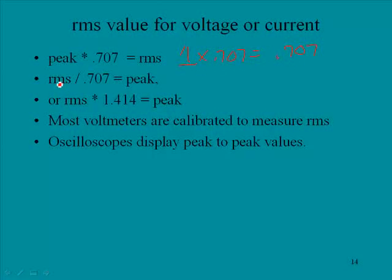We could take the RMS value, and that would be 0.707 in this case, and divided by 0.707, and that would equal the peak. So 0.707 divided by 0.707, that's 1 volt, which was our original value in peak. Or we could take RMS times 1.414, and if we took 0.707 times 1.414, we would get 1 volt.